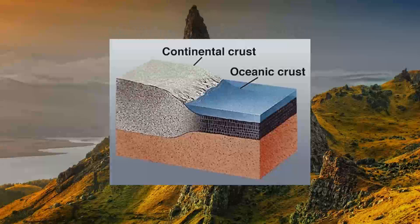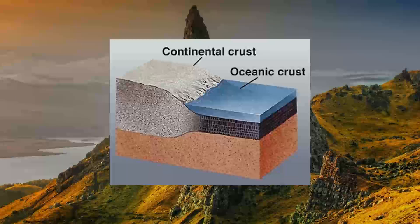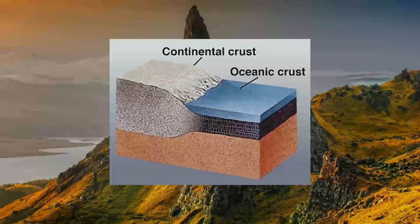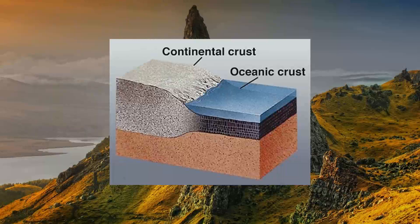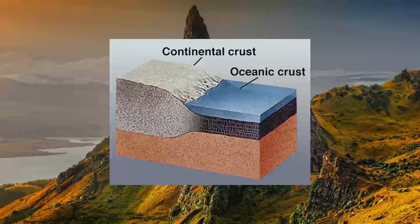Let's look at that graphic of the ocean and continental crust again. You can see the thick, light-colored, silica-rich continental crust and the thin, dark, mafic ocean crust. Both of these are parts of the lithosphere, but they are compositionally very different, and as we will see, they behave differently tectonically.